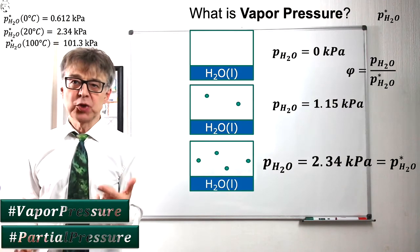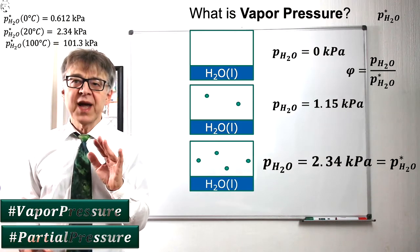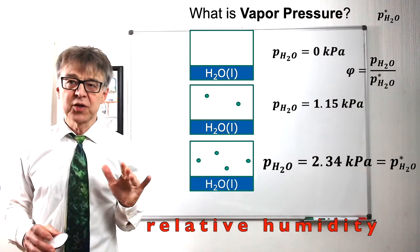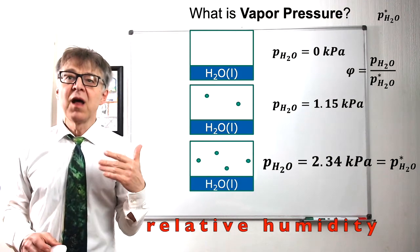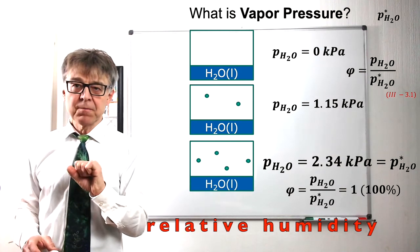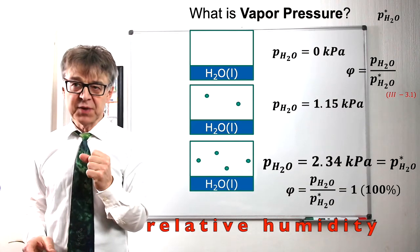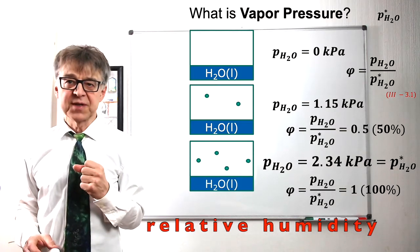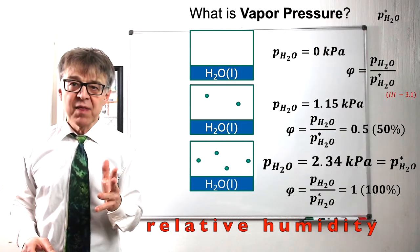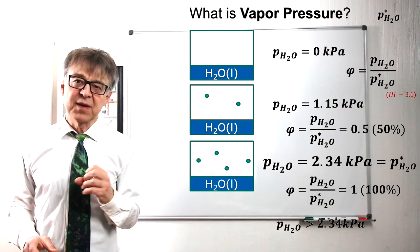If we set the partial pressure of water in relation to the vapor pressure of water, we get the relative humidity φ. This relative humidity is 100%. The air is saturated in water vapor when the vapor pressure is reached. In the second picture φ equals 50% humidity. In the first picture 0%. We can even oversaturate the gas phase with water vapor. Then φ will exceed 100%. However, this is a metastable state.